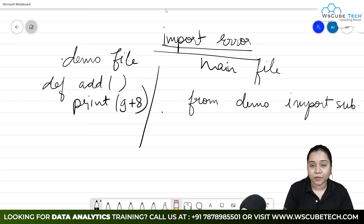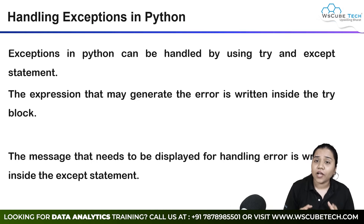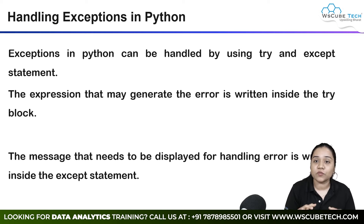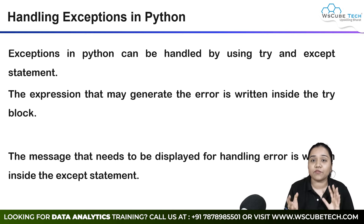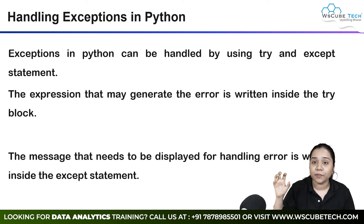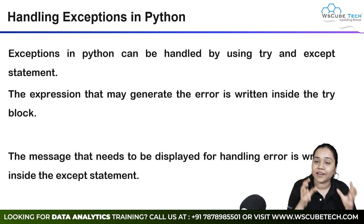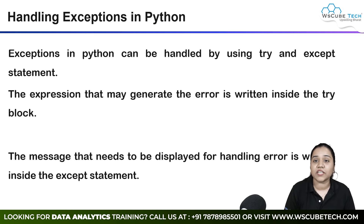Now we will discuss how to handle all these kinds of errors one by one. In Python, an error can be handled with the help of a try and except block. We will use the try statement and the except statement to handle our errors. Inside the try statement, we write the code in which the error might occur. Inside the except block, we write the message that needs to be executed when an error occurs.